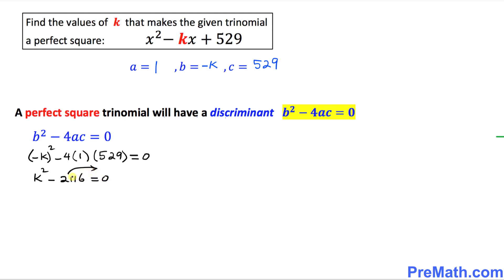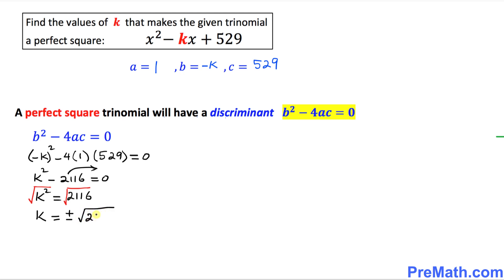Simplifying, negative k squared becomes positive k squared, and 4 times 1 times 529 gives us 2116. Moving negative 2116 to the other side, k squared turns out to be positive 2116. Now let's take the square root on both sides to get rid of the square on k, giving us k equals positive or negative square root of 2116.